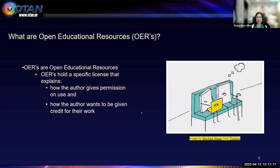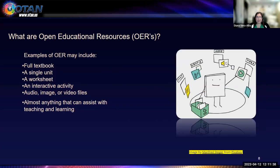OERs hold a specific license that explains how the author wants to give permission on the use of their materials and how the author wants to be given credit — both of those appear on all Creative Commons licenses. Examples of OERs include a full textbook, a single unit or chapter, a worksheet, an interactive activity, an audio file, an image file, video files, or a presentation — like this one, which is licensed Creative Commons. Basically, almost anything that can assist with teaching and learning can be an open educational resource.